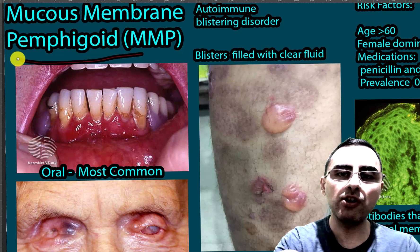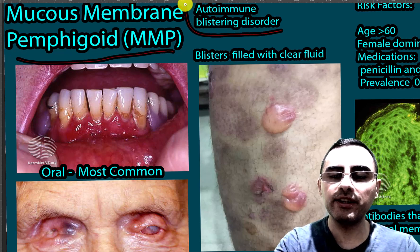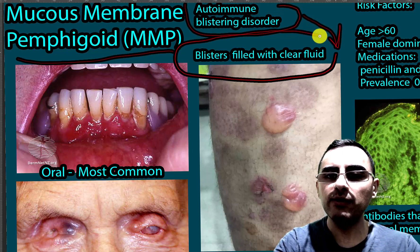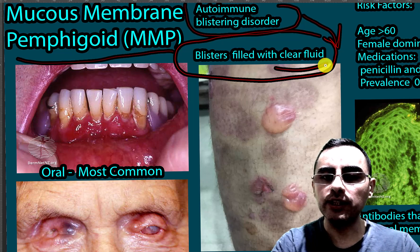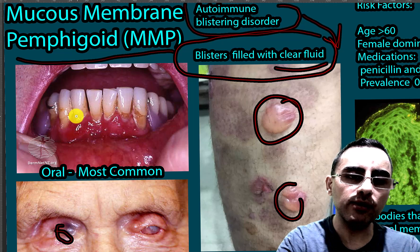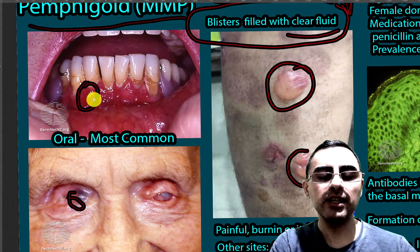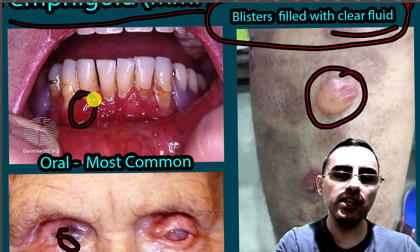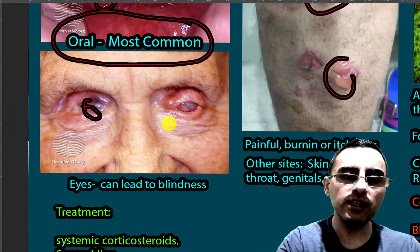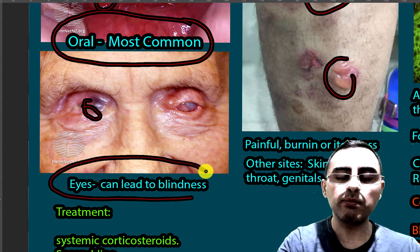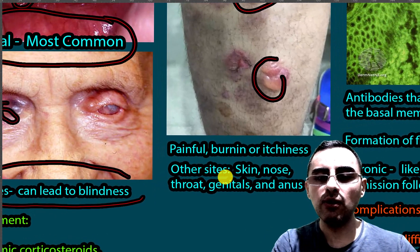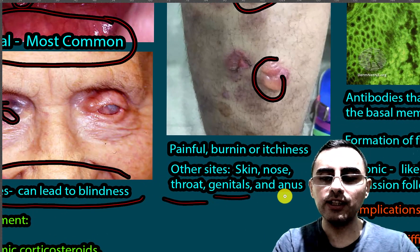Mucous membrane pemphigoid is an autoimmune blistering disorder, which means it causes blisters filled with clear fluid. It can affect several parts of the body including mucous membranes. The most common manifestation is the oral cavity, and the most serious manifestation involves the eyes because it can cause blindness. Sometimes it also affects the skin, nose, throat, genitals, and anus.